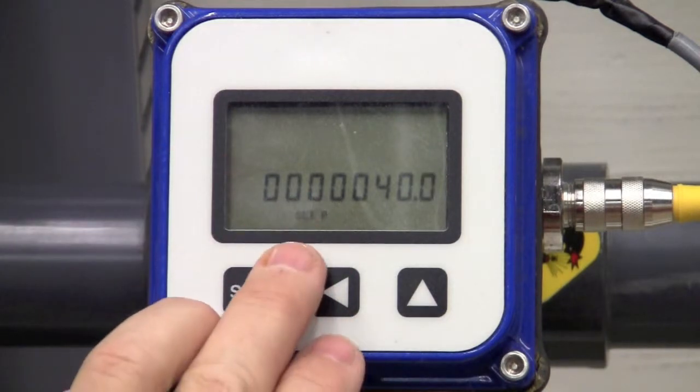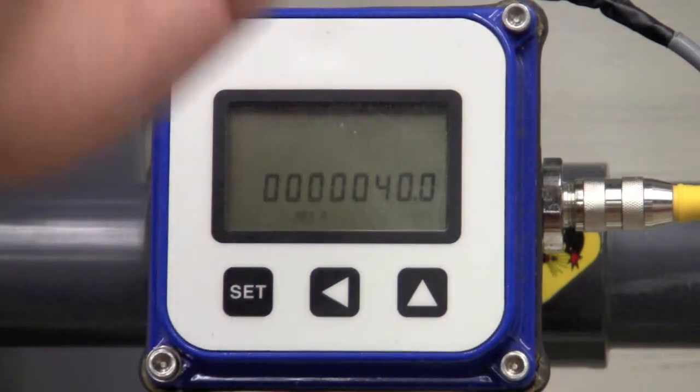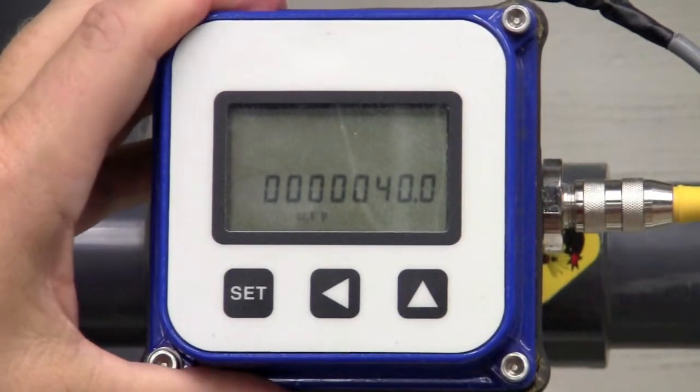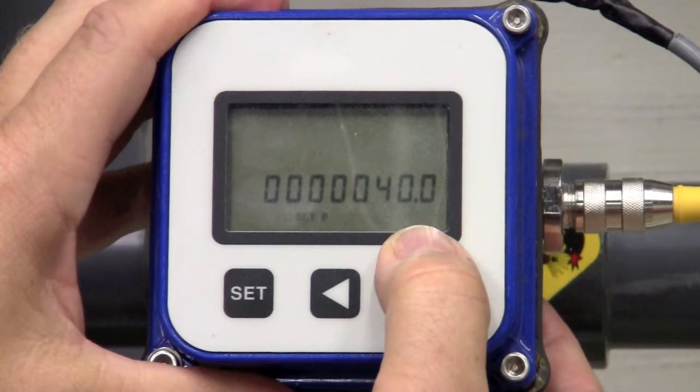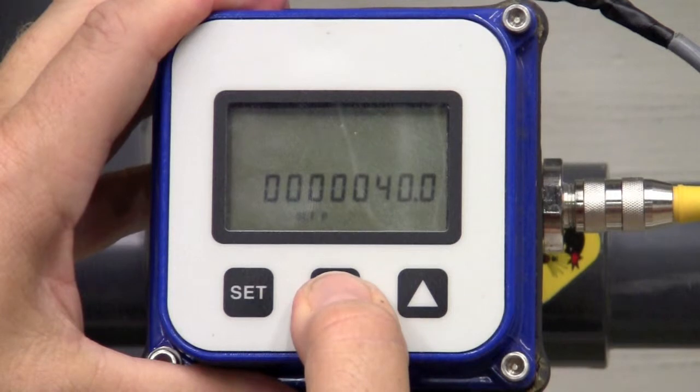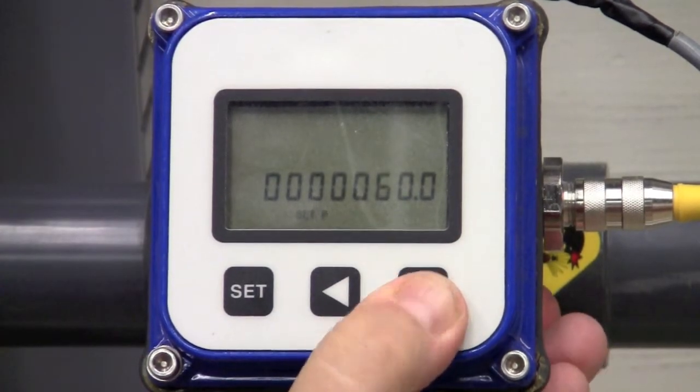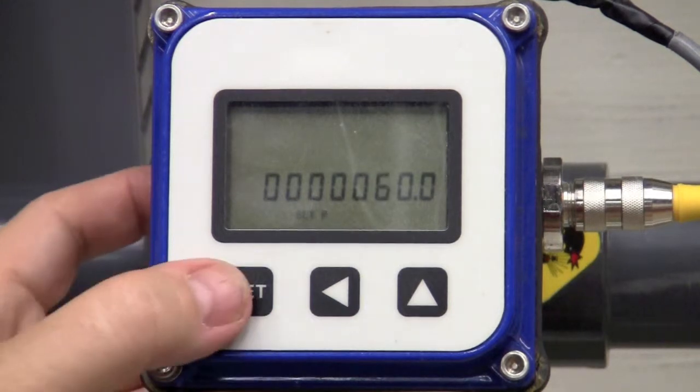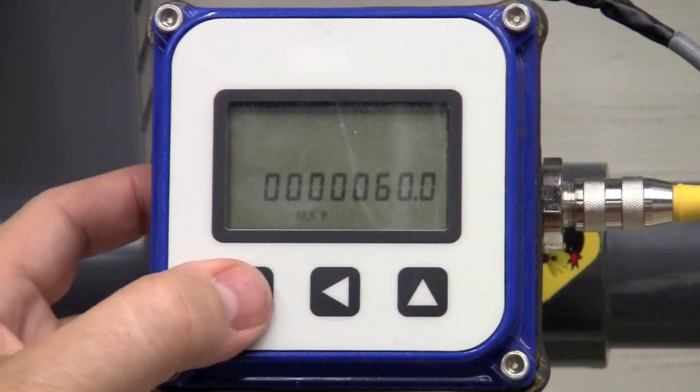It'll drive into the next parameter. The next parameter is Set P, and that's if you're using the pulse output. You can set the number of pulses per gallon. Let me set that to 60 as well. Again, the far right digit is flashing. I use the left arrow key to move it over. Once I get it to that digit, I can hit the up arrow key, and put in 60, and that's how you key it in. Once you're done with that parameter, you hit Set.